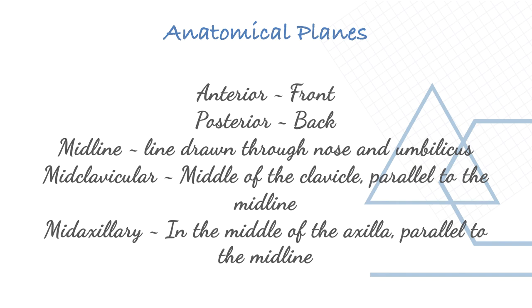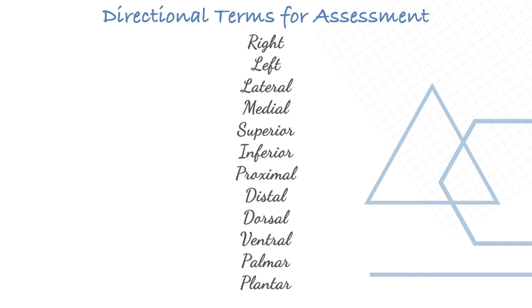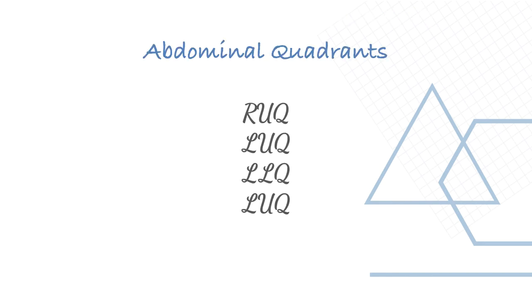Anatomical planes: anterior is the front, posterior is the back, midline is a line drawn through the nose and umbilicus, mid-clavicular is the middle of the clavicle parallel to the midline, and mid-axillary is the middle of the axilla parallel to the midline. Directional terms include right and left, lateral and medial, superior and inferior, proximal, distal, dorsal, ventral, palmar, and plantar.